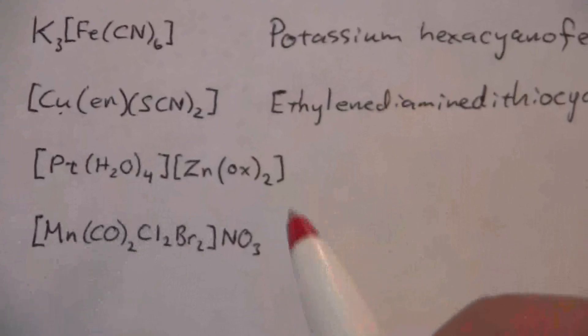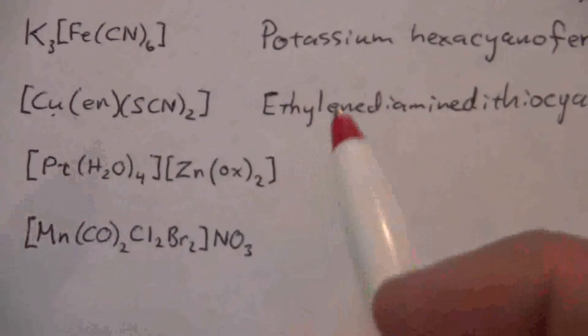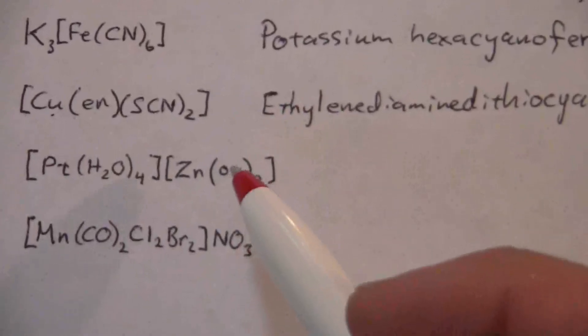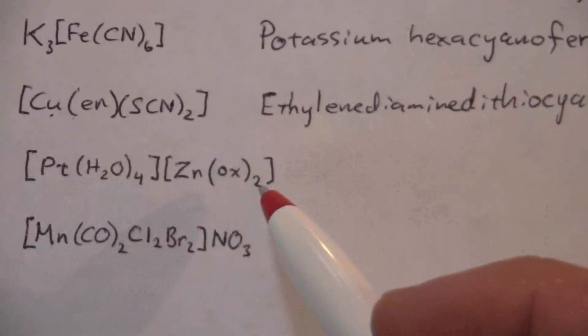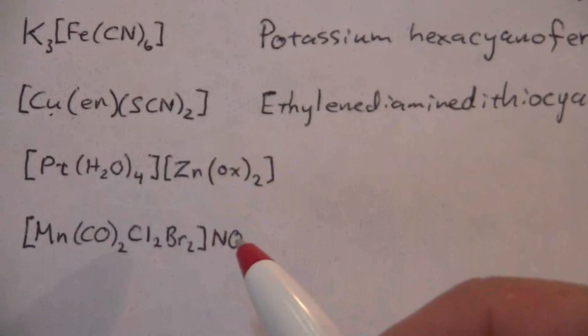Again, that would be something I would give you on a test. I don't expect you to remember that particular ion. And so each one has a negative two. So together there's a negative four. Now zinc is always a positive two.